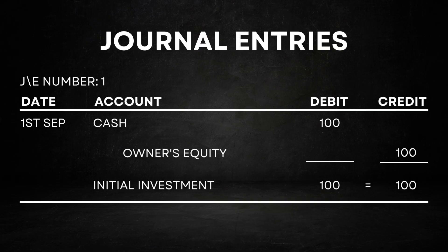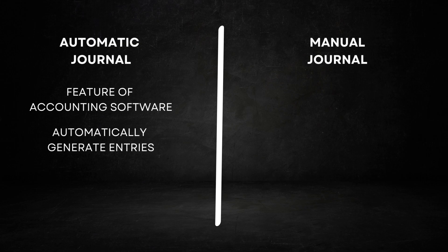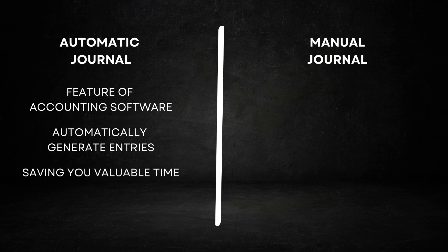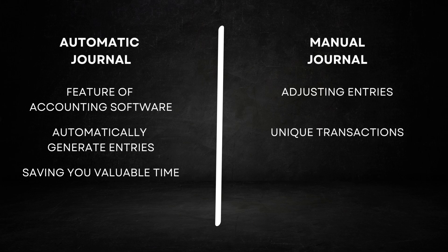However, if you're manually managing your books using spreadsheets like Google Sheets or Excel, you must pay extra attention to ensure your debits and credits are in balance. There are two types of journal entries: automatic and manual. Automatic journals are a feature of accounting software — they automatically generate entries in the background as you enter invoices and receive payments, saving you valuable time. On the other hand, manual journals are typically used for adjusting entries and unique transactions that cannot be handled automatically. With manual journals, you need to complete all the fields in a template yourself.